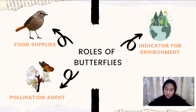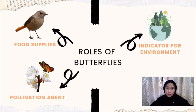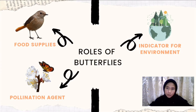Butterfly can be a food source for other animals, for example birds, bats, spiders, dragonflies and mice. A hypothesis can be made: if the number of butterflies decreases, the number of these animals will also reduce. This shows that butterflies are important in maintaining the food chain. Butterflies also act as pollination agents because they collect pollen on their legs when they sip flower nectar and carry it to another plant, helping flowers produce new seeds.